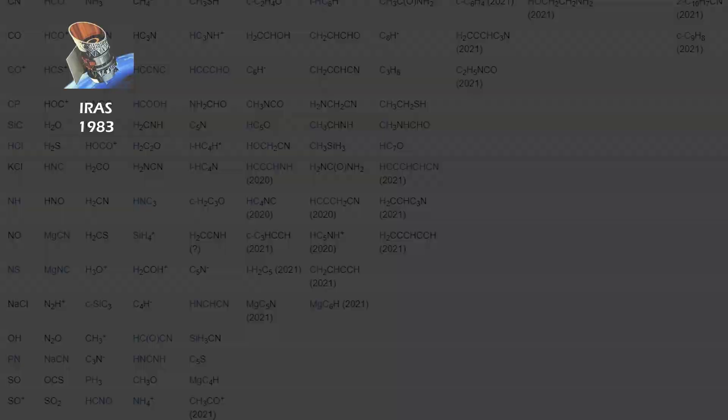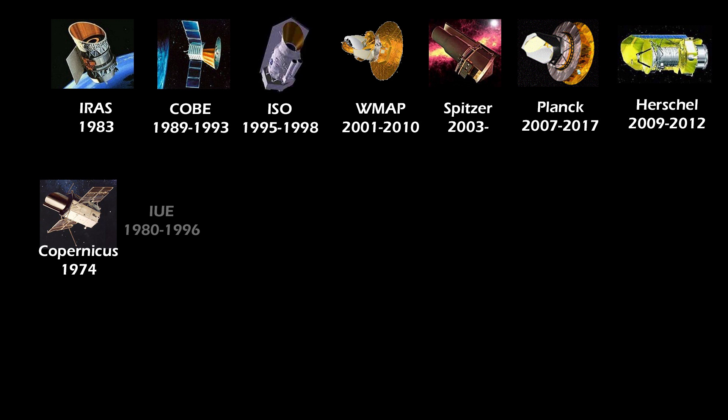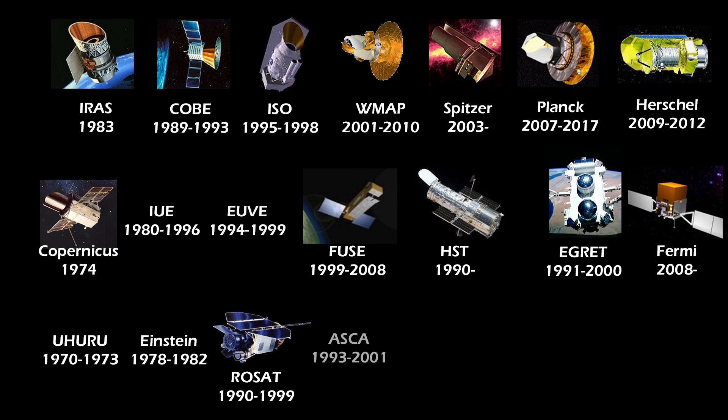Our knowledge of the interstellar medium really took off in the space era. Putting telescopes in space opened up parts of the electromagnetic spectrum that were not accessible from the ground, like the infrared, the ultraviolet, the x-rays and the gamma rays.